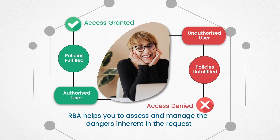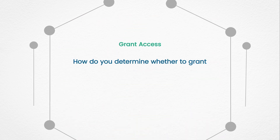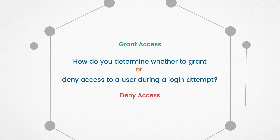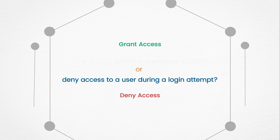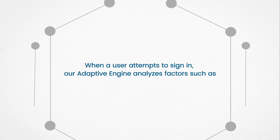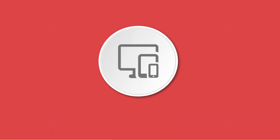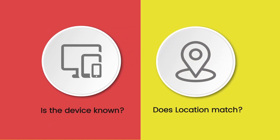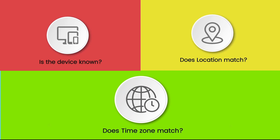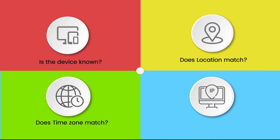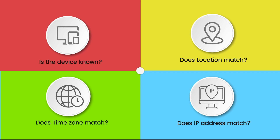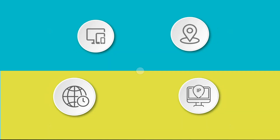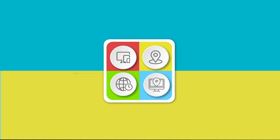Risk-based authentication helps you assess and manage the dangers inherent in a request. When a user attempts to sign in, our adaptive engine analyzes factors such as: device information — is the user trying to log in from a registered or known device? Location — is the user in the same building that houses the server? Time zone — is this user trying to log in from another time zone? Network — is the person logging in from a familiar IP address? Based on all these factors, the system makes a decision.